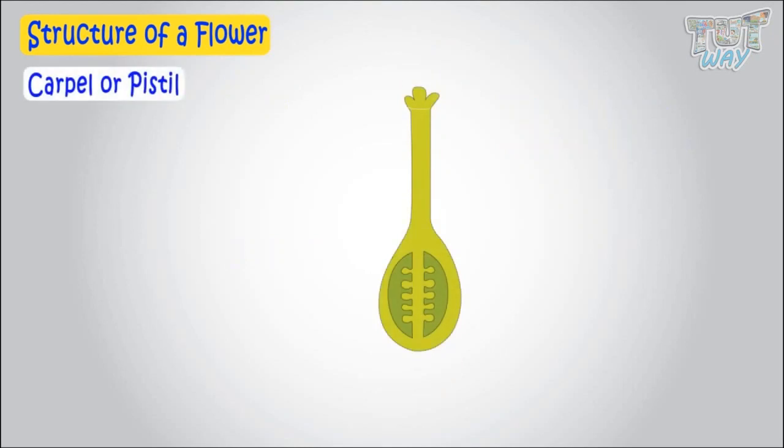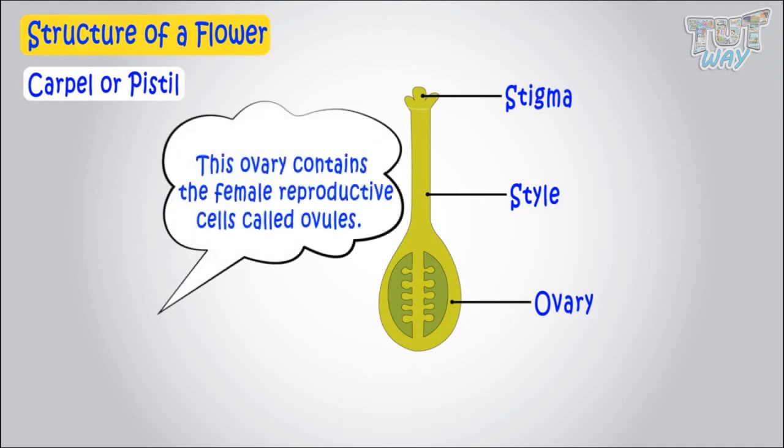Pistil consists of sticky structure called stigma, which is attached to a long tube-like structure called style. And style ends in a swollen part called ovary. And this ovary contains the female reproductive cells called ovules.